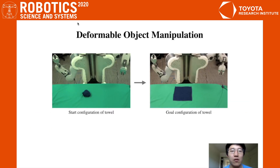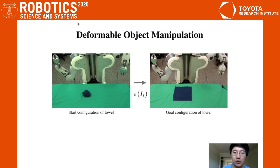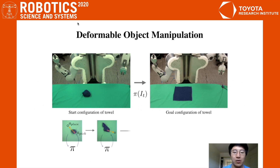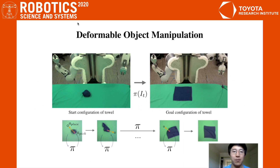So in order to solve the problem of robustness and generalization, our paper seeks to solve deformable object manipulation using deep reinforcement learning. To be precise, we learn a policy π that takes in an image and outputs pick-place actions. We apply the action on the current frame and then repeatedly apply it until we eventually reach our goal configuration — in this case, we're trying to spread out the cloth.